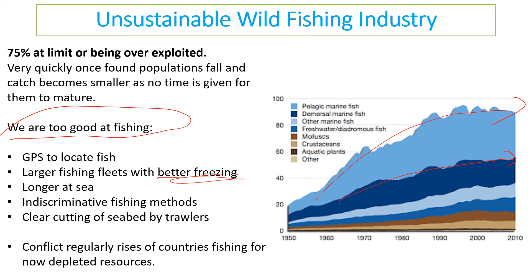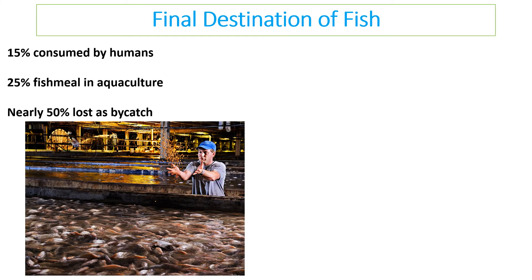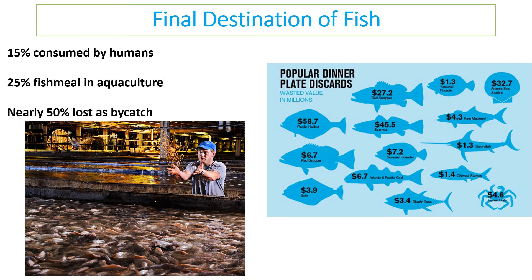There is increasing conflict between countries competing for depleted natural resources. Only 15% of fish caught is consumed directly by humans. About 25–30% is used in fish meals in agriculture. And around 50% is lost as bycatch — effectively discarded and thrown away — because we are not careful about what we catch. We take everything out and then use only the fish we want.